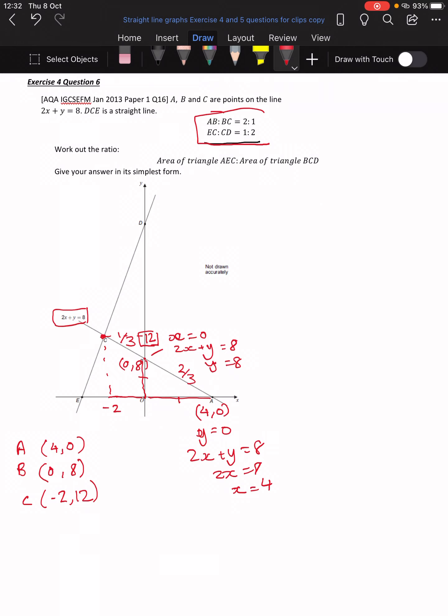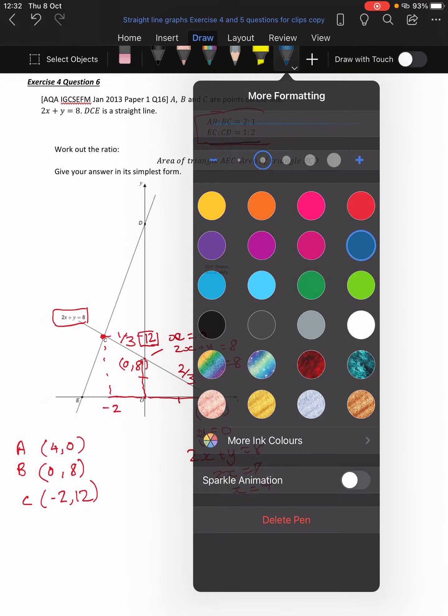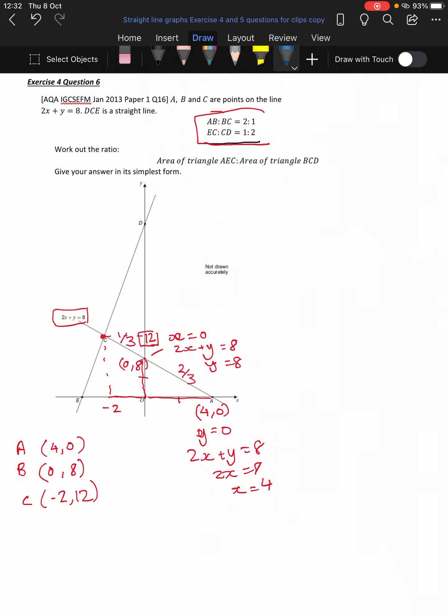And we know that this is, why don't I change to blue? That's a nice blue. So E to C is one third. Again, going by this bit of information. And then C to D is two thirds. So if we know, using the same thing, so to get from here to there, is going across by two and up by 12, then this is two thirds. So we'll double it. So that will be going across by one.